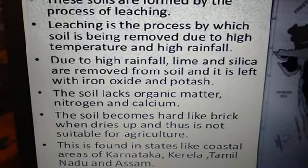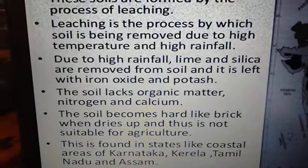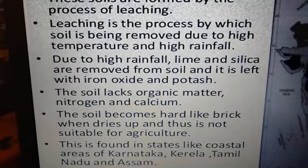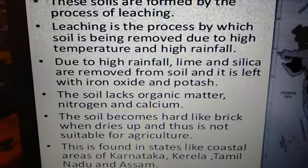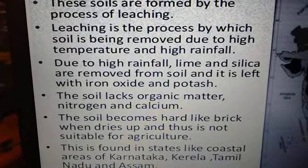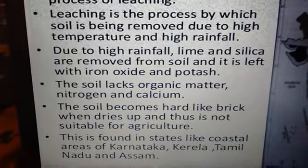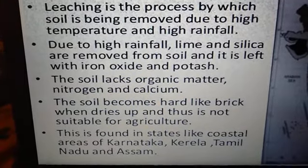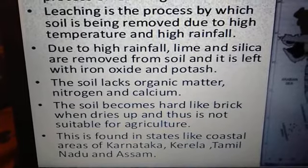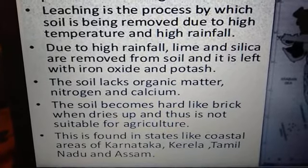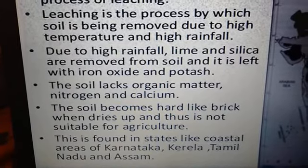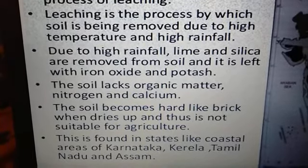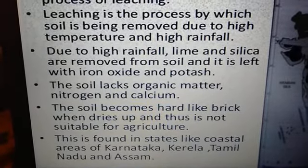Laterite soil lacks organic matter, nitrogen, and calcium. The soil becomes hard like a brick when it dries up and is not suitable for agriculture. It is found in states like Karnataka, Kerala, Tamil Nadu, and Assam.